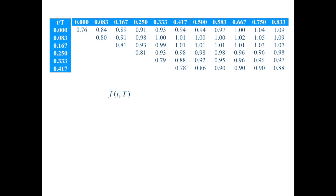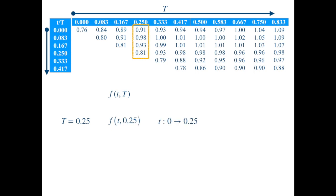Each entry now represents the forward rate at small t for instantaneous borrowing at capital T. Small t runs along the rows and capital T along the columns. If you fix a maturity time — say three months, which is 0.25 in years — then the forward rate will be a function of time as small t goes from 0 to 0.25. The remaining maturity shrinks as time progresses, and the forward rate becomes meaningless after small t exceeds capital T, because it would imply borrowing in the past. So what elements represent the short rates? The short rate at a given time is the interest rate for instantaneous borrowing at that moment — it will be the entries along the diagonal.